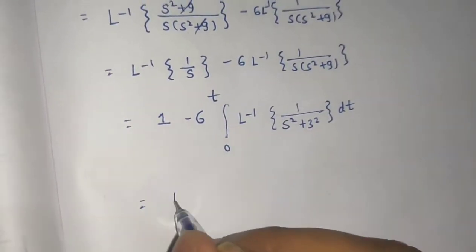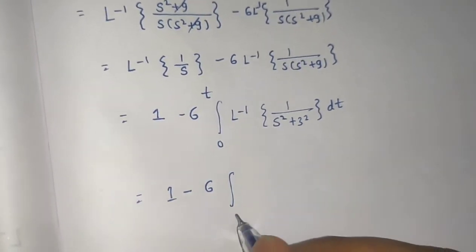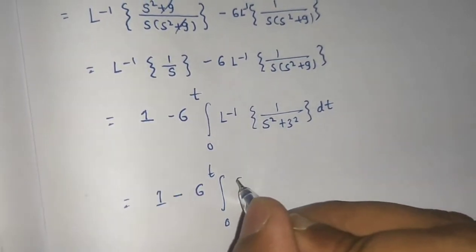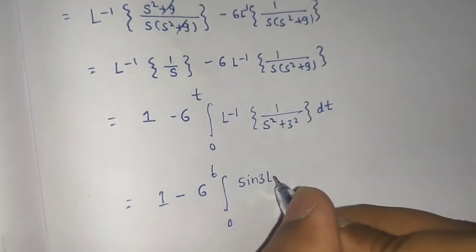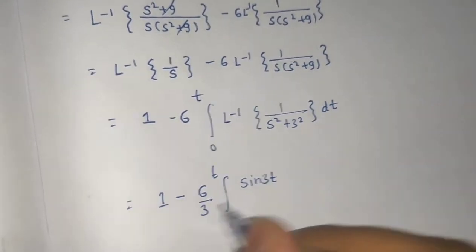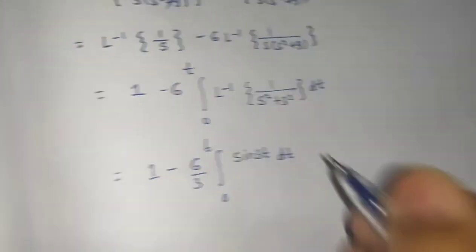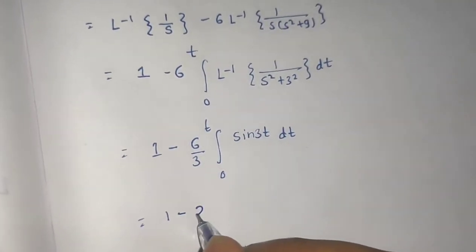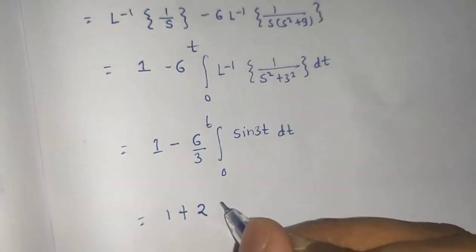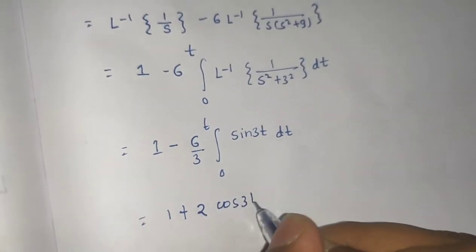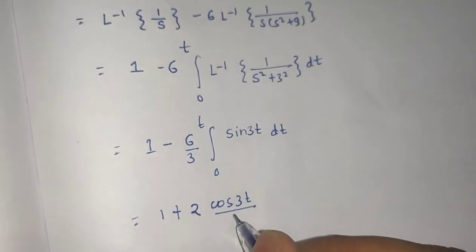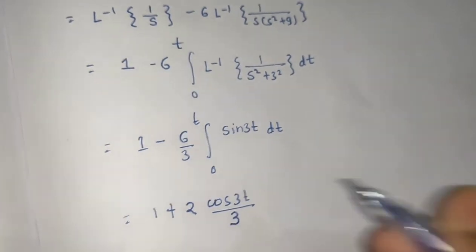So we are left with 1 minus 6 times the integral from 0 to t of the Laplace inverse of 1/(s² + 9), which is sin(3t)/3. Integration of sine gives minus cosine, so minus 6 times minus cos(3t)/3 becomes plus, giving 1 plus 2cos(3t)/3, evaluated from 0 to t.